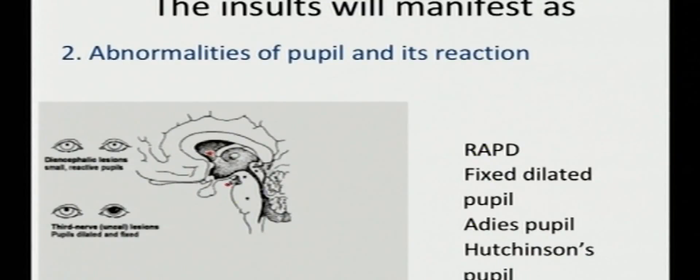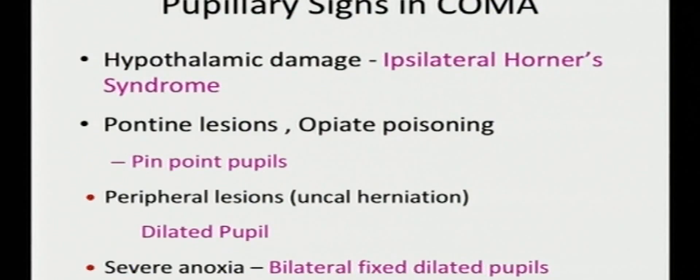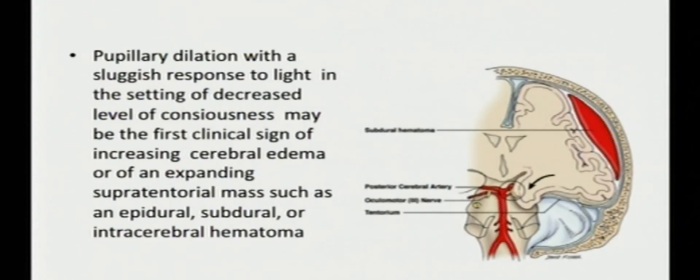Abnormalities of the pupil, RAPD, fixed dilated pupil, everything has been discussed earlier. How can we help a neurologist? Pupillary signs in coma: Ipsilateral Horner syndrome will have hypothalamic damage. Pinpoint pupils will point towards pontine lesions. Dilated pupil will point towards peripheral lesions and bilateral fixed dilated pupils will point towards severe anoxia.